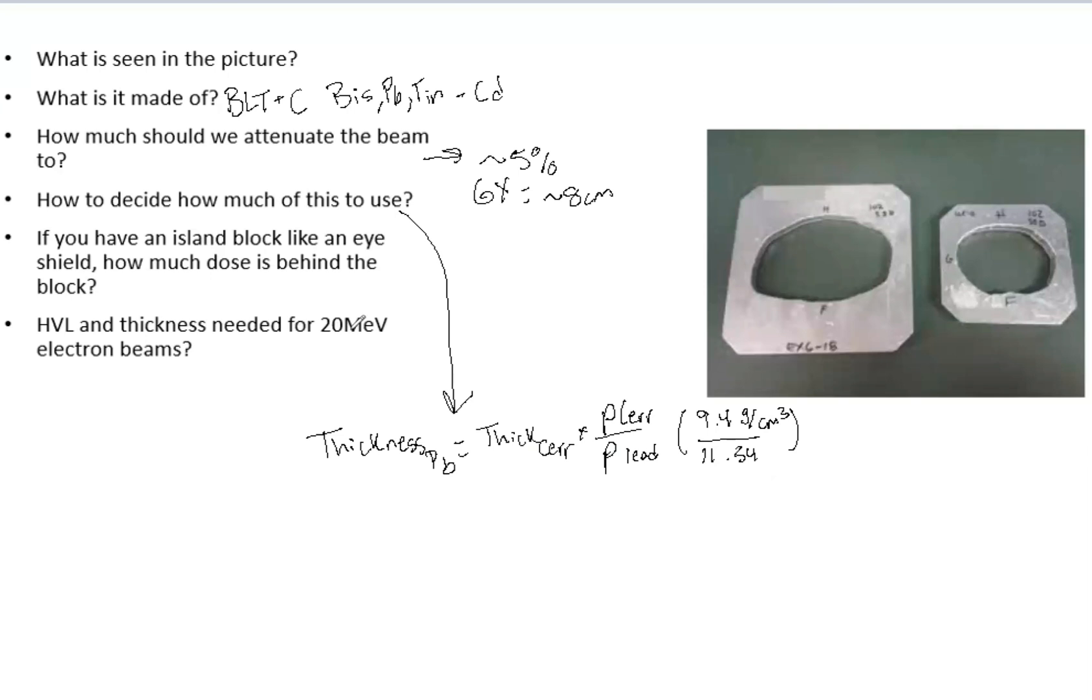If you have an island block, like an eye shield, this does happen in realistic medical physics in the clinic, how much dose is behind the block? So you remember, we are going to use this to block to about 5% past the shield or past the Cerrobend. But because it's an island block, you're going to have, imagine this block, you have a beam coming through, but you also have some radiation and some scatter that is going to get in behind that block. So the combination of the transmission through the block and the scatter is going to be about 20 to 30% compared to no block at all. So of course, this does depend on the size of the block, but that is a good number to remember if you are asked or quizzed about this.